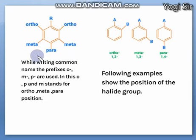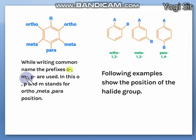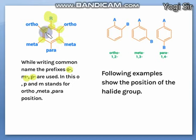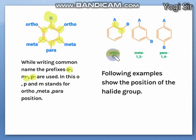Next is nomenclature for aromatics. In benzene, a cyclic compound, in the common system we name positions as ortho, meta, and para. If one R group is already present on benzene, the two nearby positions are ortho (first and second positions), the next positions are meta (first and third), and the fourth position is para (first and fourth).